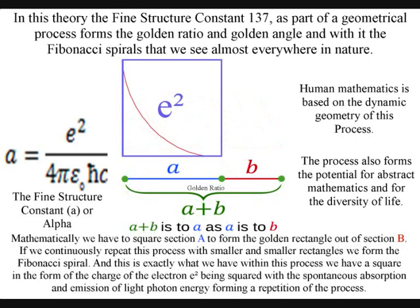Mathematically we have to square section A to form the golden rectangle out of section B. If we continuously repeat this process with smaller and smaller rectangles we form the Fibonacci spiral.